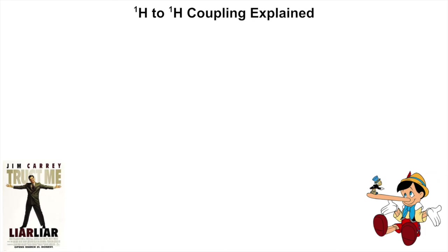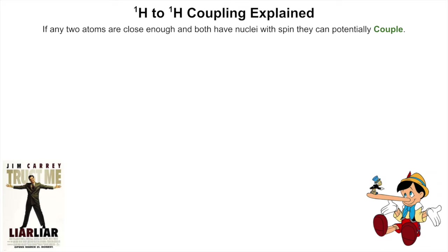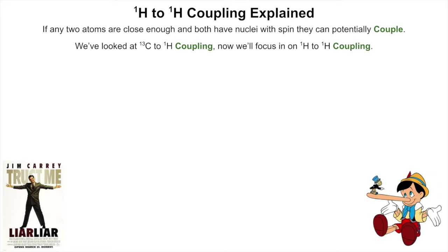I'm going to explain proton-to-proton, or H1-to-H1, coupling. I could have done this earlier before the carbon NMR coupling, but it doesn't matter as long as we learn it. If any two atoms are close enough and both have nuclei with spin, they can potentially couple. We've looked at carbon-13 to hydrogen coupling; now we'll focus on hydrogen-to-hydrogen coupling.